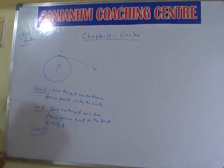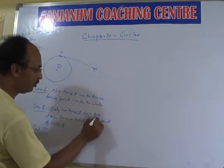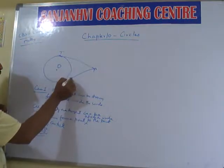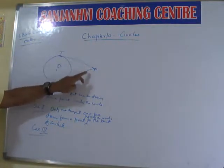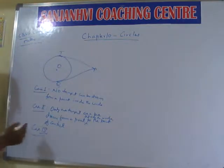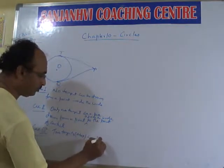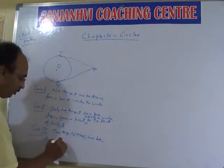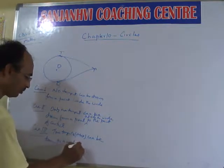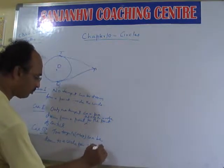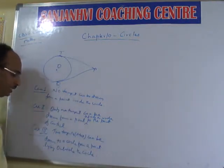Case 3. The maximum number of tangents you can draw from one point outside this circle is 2. Two tangents can be drawn from a point lying outside the circle. So you can say that 2 tangents, this is maximum, can be drawn to a circle from a point lying outside the circle.